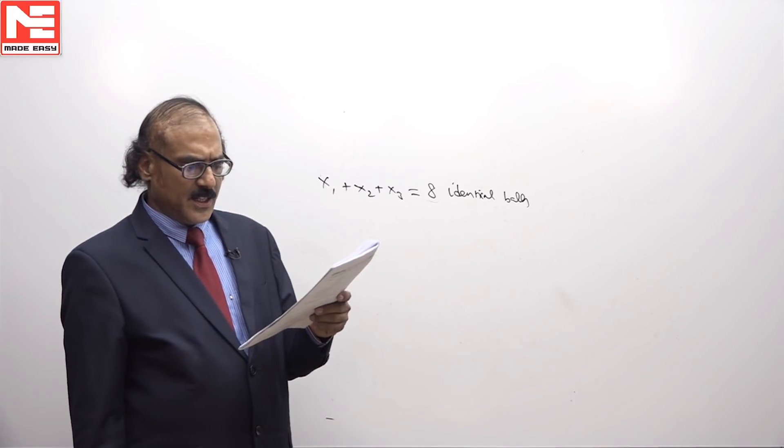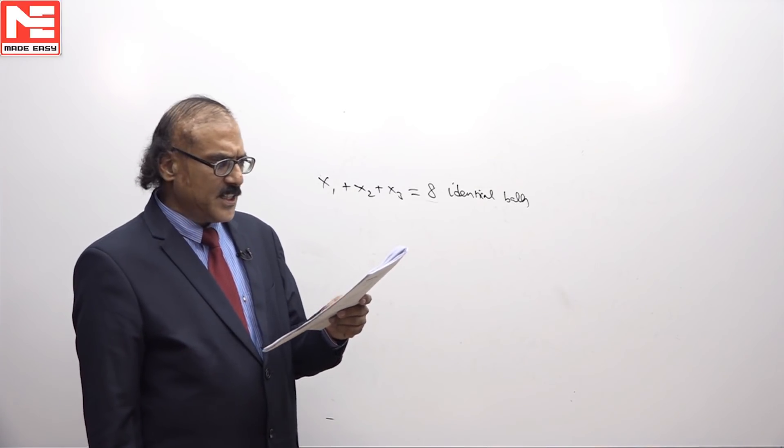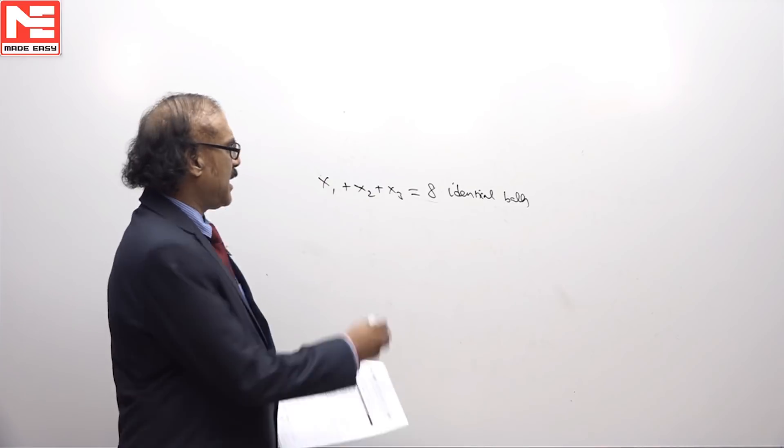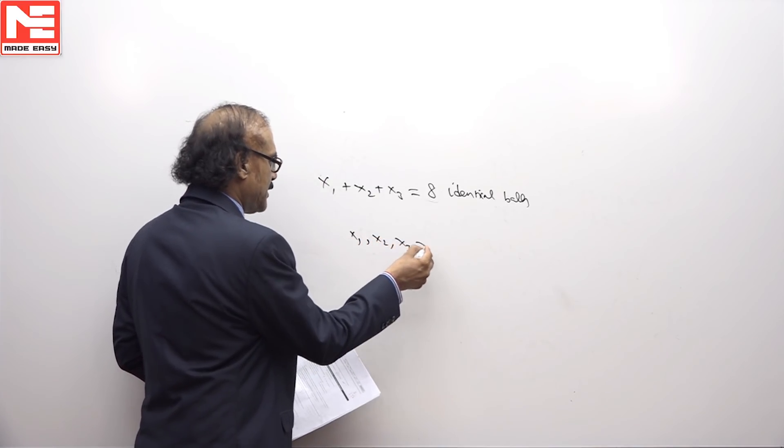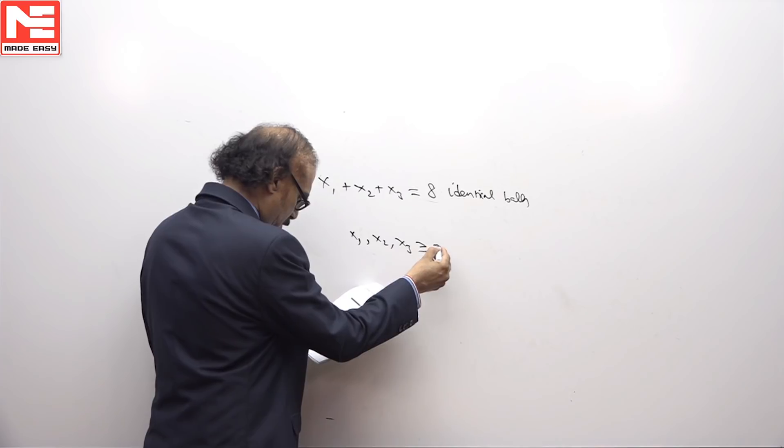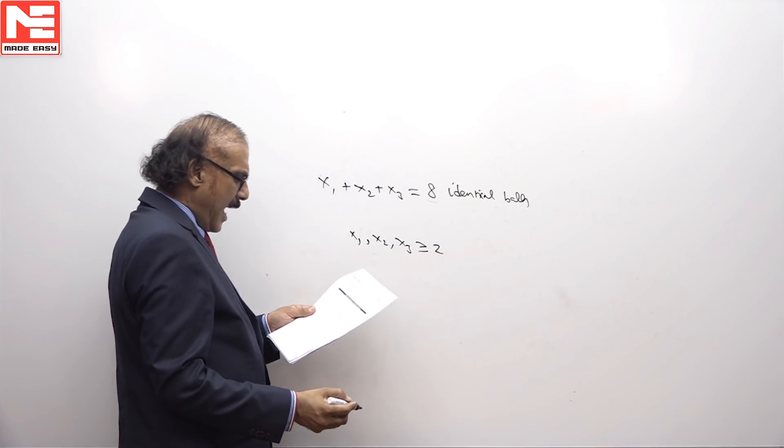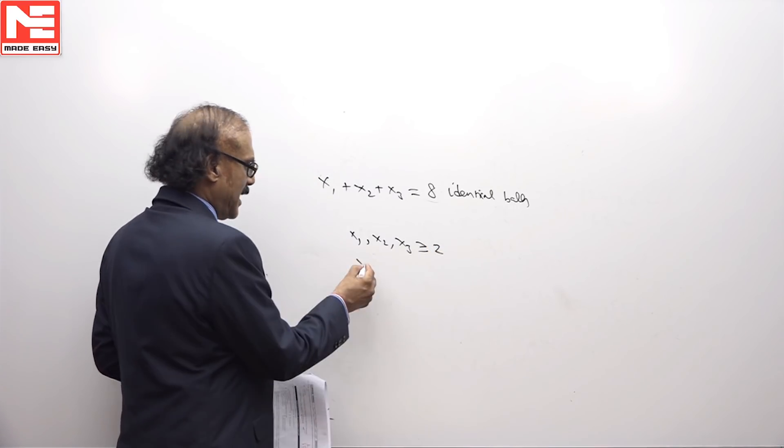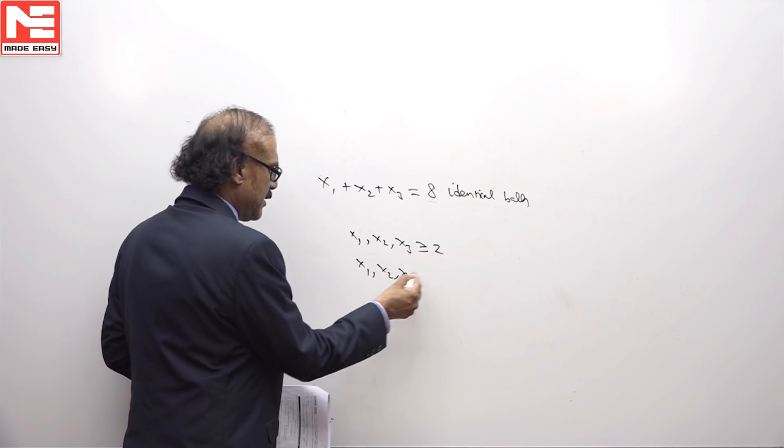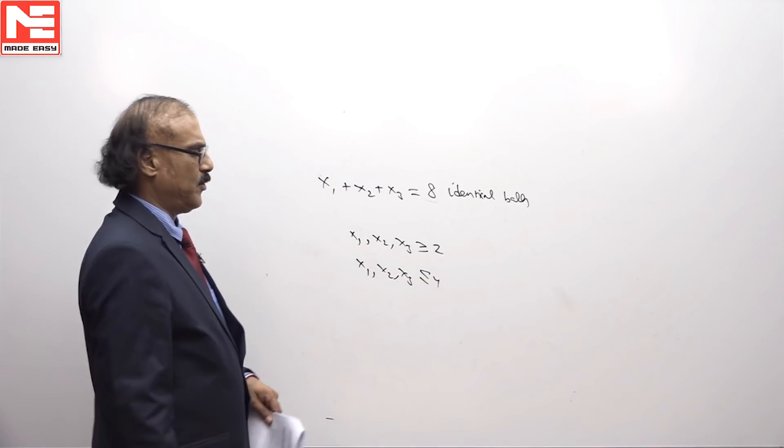3 children, if each receives at least 2 balls, that is x1, x2, x3 is at least equal to 2 and no more than 4, that means x1, x2, x3 no more than 4.